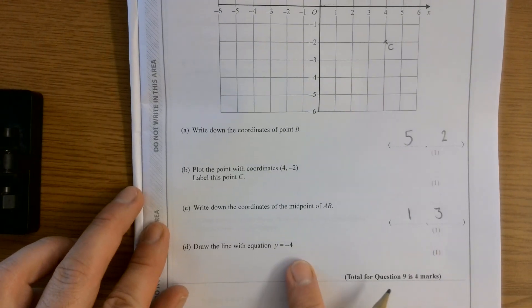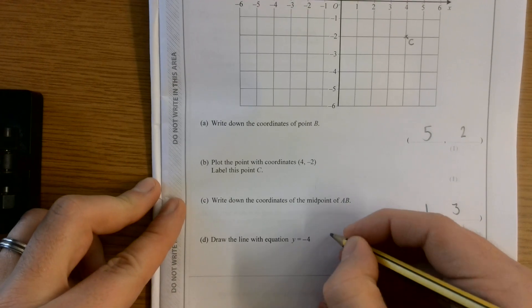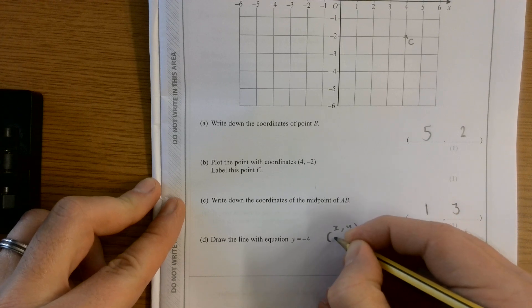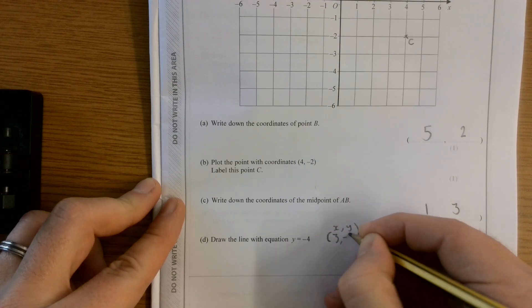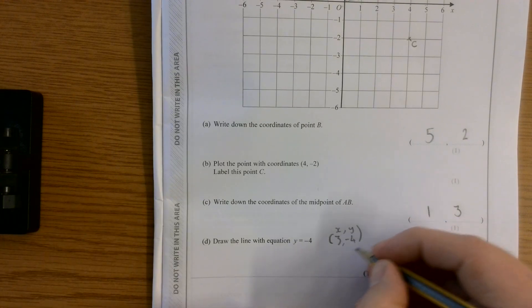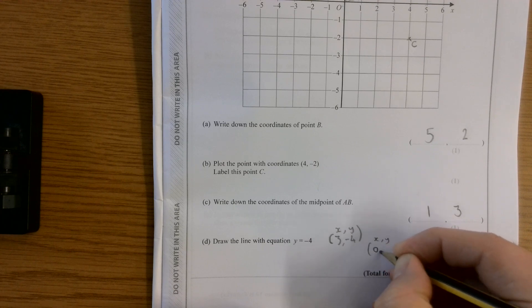And last one, draw the line with equation y equals negative 4. Now, I always get a bit confused by this one. So what I'm going to do is pick some points where my y value is negative 4. So I'm going to pick the point 3, negative 4 because my y value is negative 4. And I'm going to pick another point where my y value is negative 4. So I'm going to pick 0, negative 4.